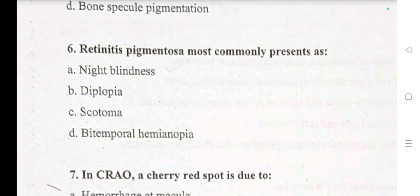Question number 6: retinitis pigmentosa most commonly presents as — A: night blindness, B: diplopia, C: scotoma, D: bitemporal hemianopia.